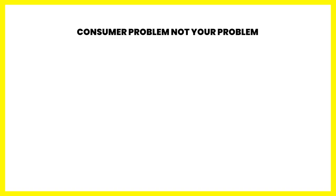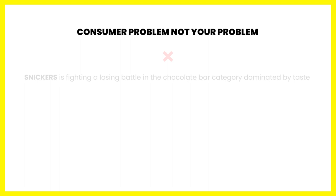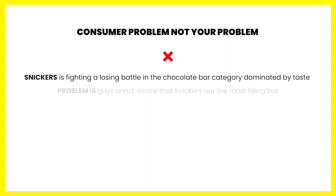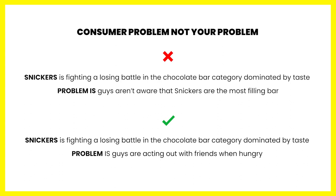Most marketers feel very comfortable telling us what the problem of the business is. However, where they struggle is working out the problems the consumer is trying to solve — they keep confusing their problems for the consumer's. For instance, the wrong way to write the consumer problem for Snickers would be: 'The problem is guys aren't aware that Snickers is the most filling bar' — that is the business problem. Their consumer goal is that they want to feel part of the group, with the problem being they act out when hungry and the group doesn't want them around. So the right way to write the consumer problem is: 'Guys are acting out with friends when hungry.'